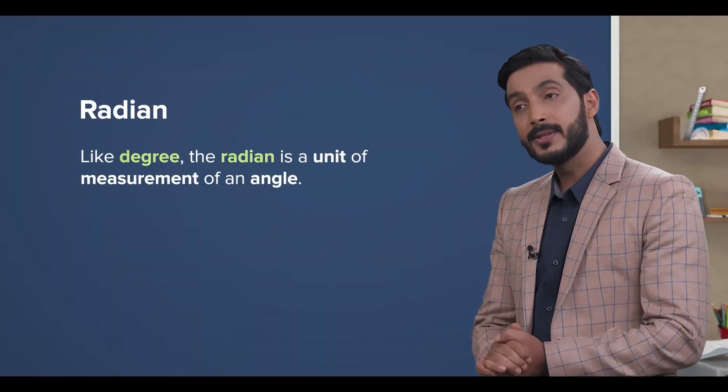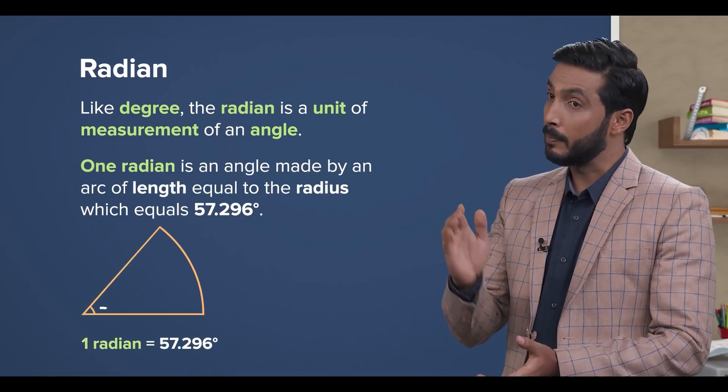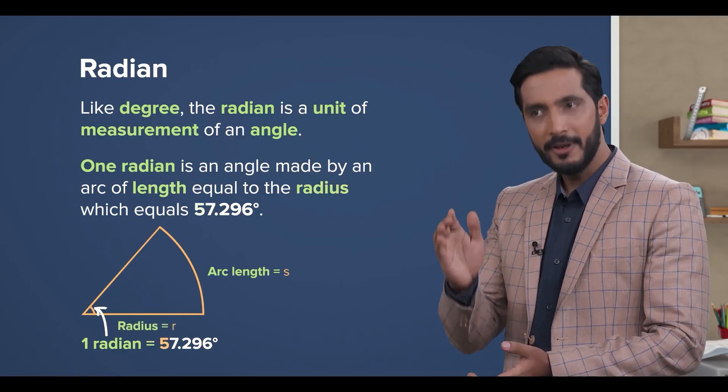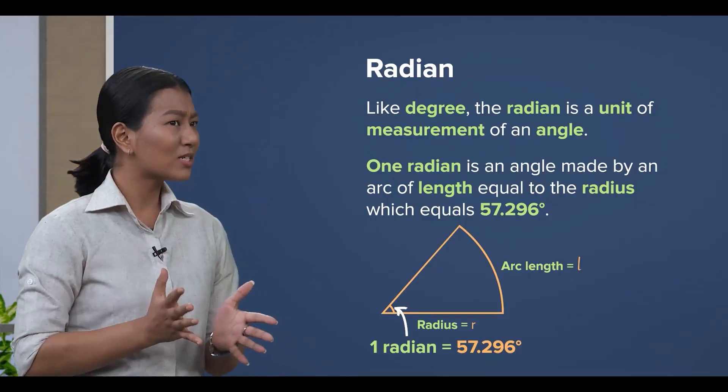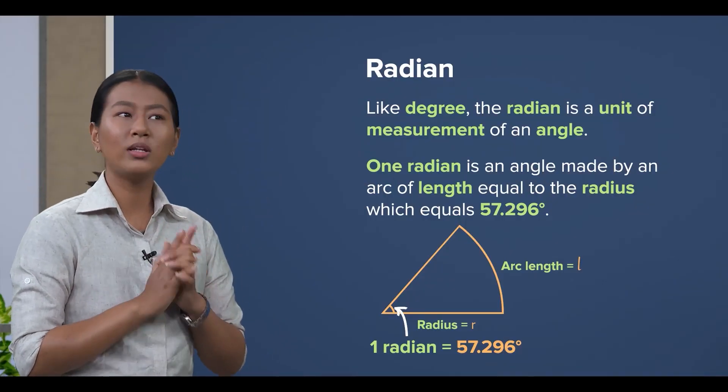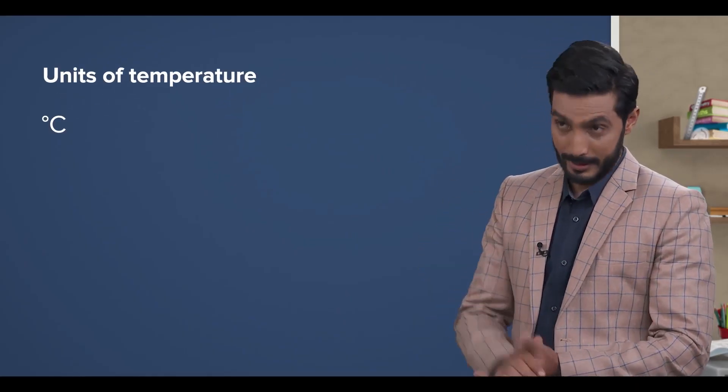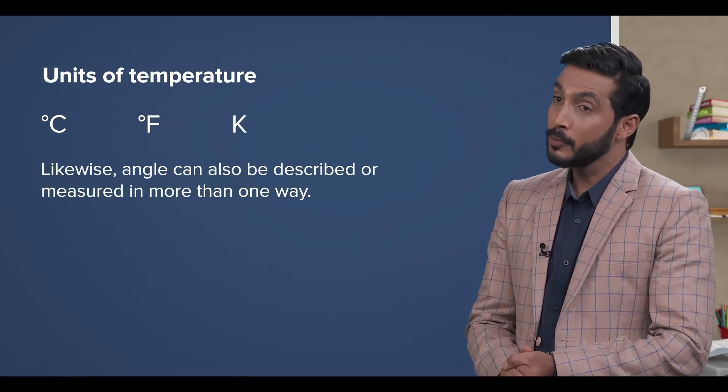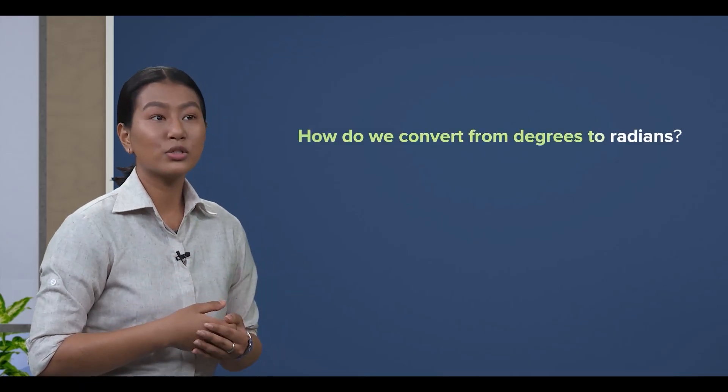Like degree, the radian is a unit of measurement of an angle. One radian is an angle made by an arc of length equal to the radius, which equals 57.296 degrees. Wow, I always thought that the degree is the only unit for angle measurement. Well, temperature can be measured in degrees Celsius, degrees Fahrenheit, and Kelvin. Likewise, angle can also be measured or expressed in more than one way. Got it. So, teacher, how do we convert degrees to radians?